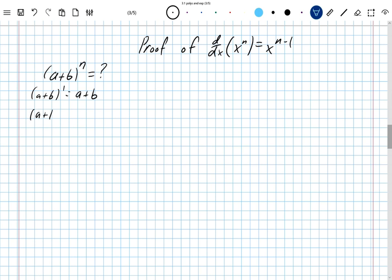a plus b squared is equal to a squared plus 2ab plus b squared. a plus b cubed is equal to a cubed plus 3a squared b plus 3ab squared plus b cubed.